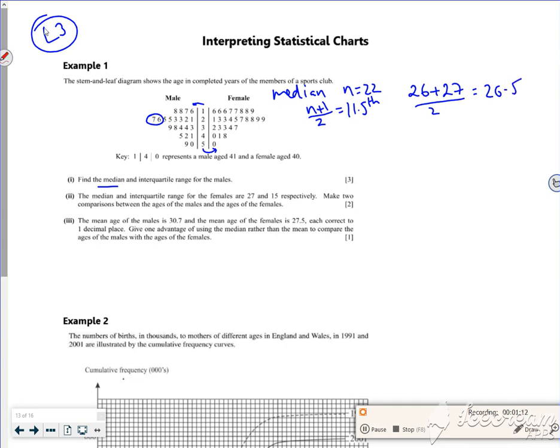So if you imagine, I'm chopping that list in half there. Now the lower quartile, Q1 or LQ, whatever you want to call it, is the median of this first half of the list.